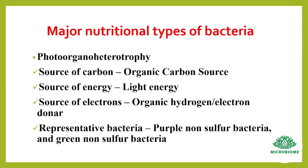Photoorganoheterotrophy: here the source of carbon is organic carbon, the energy source is light energy, and the source of electrons is organic hydrogen or electron donors. Bacteria that come under this group include sulfur-oxidizing bacteria, hydrogen bacteria, and nitrifying bacteria.